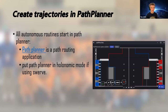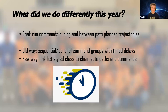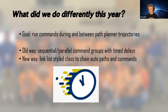Our next segment is on autonomous, and autonomous kind of feeds back into all of these different topics — we use AdvantageScope and AdvantageKit, localization and vision. All those things lead up to autonomous. All our autonomouses start in PathPlanner — it's a path routing application. There's also PathWeaver but PathPlanner has been super useful, very intuitive. If you're using swerve, make sure to use holonomic mode in PathPlanner. So what did we do differently about autonomous this year? We wanted to run commands during and between PathPlanner trajectories. The old way was a bunch of different commands that run sequentially or in parallel command groups with delays thrown in — pretty unorganized. Whereas now the way we do it is more like a chain.